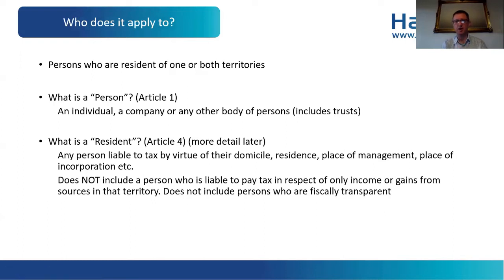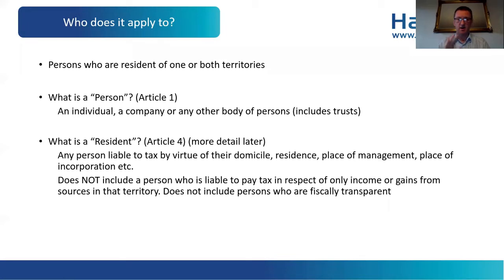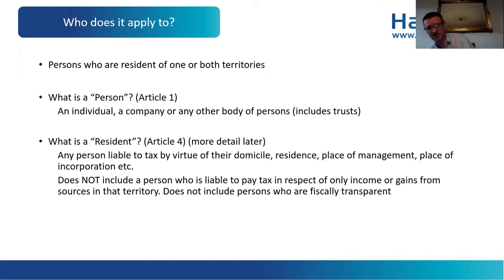Who does the treaty apply to? The treaty applies to all residents of the two territories, defined in Article 4. It is any persons who are resident of one or both territories — not only those resident in both territories. You can be resident in one territory and have income in another, and that is covered by the treaty. A 'person' under Article 1 is an individual, a company, or any other body of persons — essentially a tax unit.